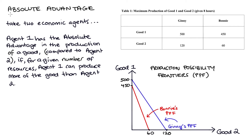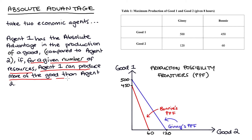Hi, everyone. In this video, I'm going to be talking about absolute advantage. The definition I have on screen is the most common sort of definition. So we're going to take two economic agents, and we say that agent one has an absolute advantage in the production of a good compared to agent two if, for a given number of resources, agent one can produce more of the good than agent two.